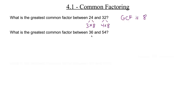What is the greatest common factor between 36 and 54? You really need to have your multiplication tables down. Let's dissect 36: it's 2 times 18.